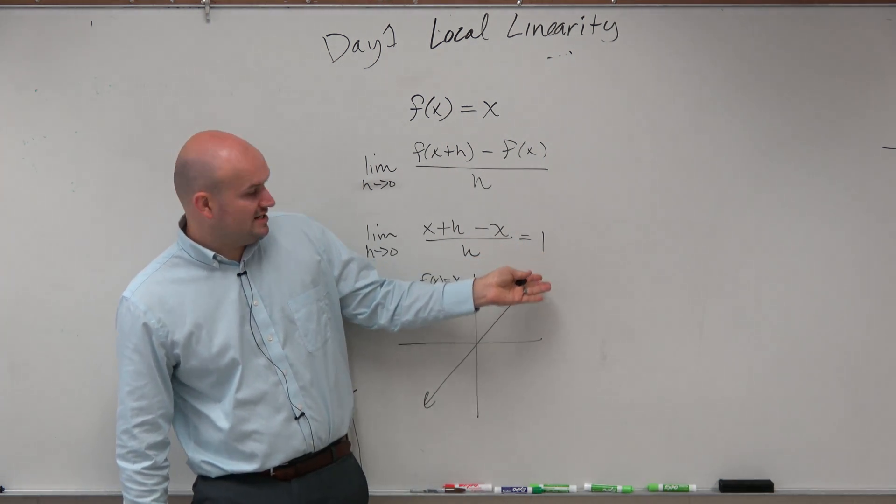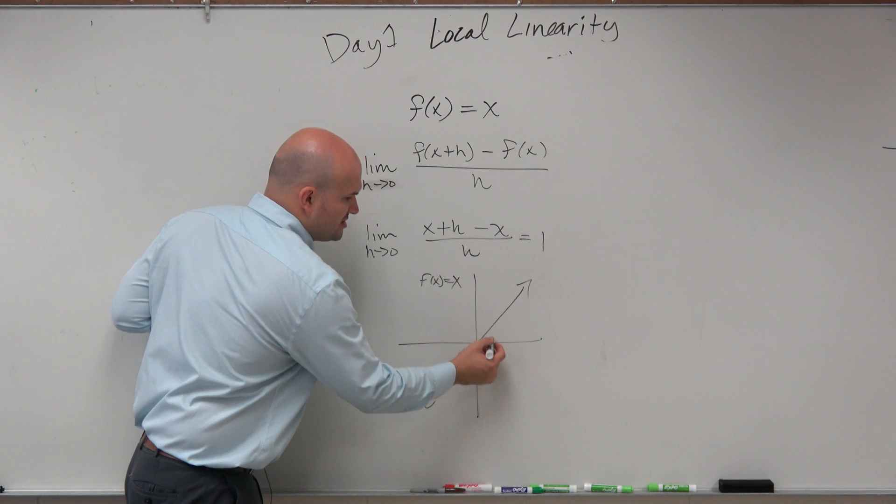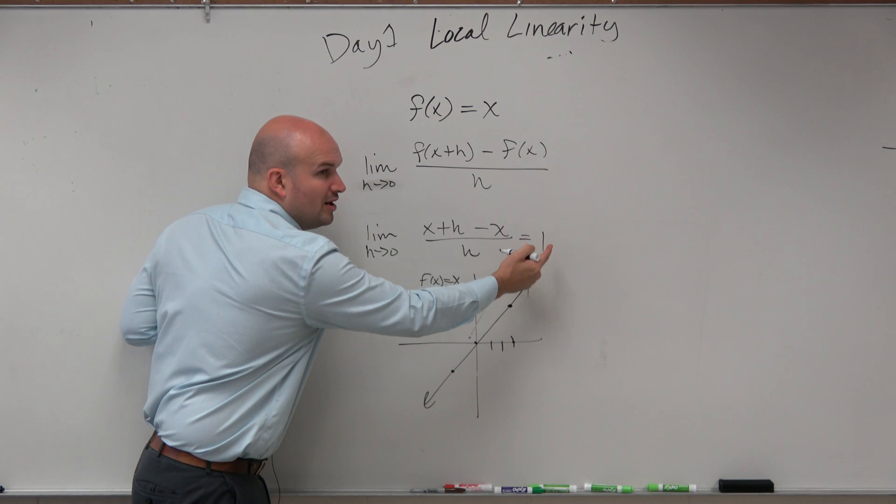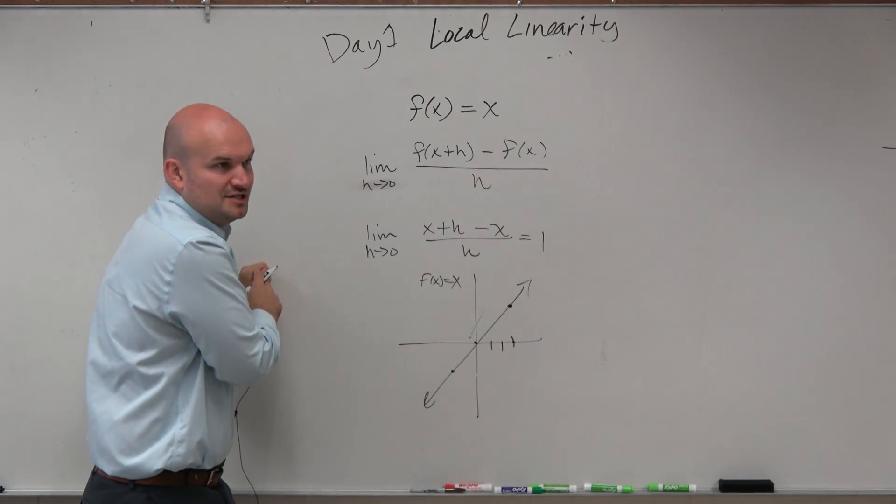So therefore, it makes sense that it doesn't matter if you choose 0, it doesn't matter if you choose 3. Whatever point you pick, you're always going to have a slope of 1. It's never changing. It's always the same.